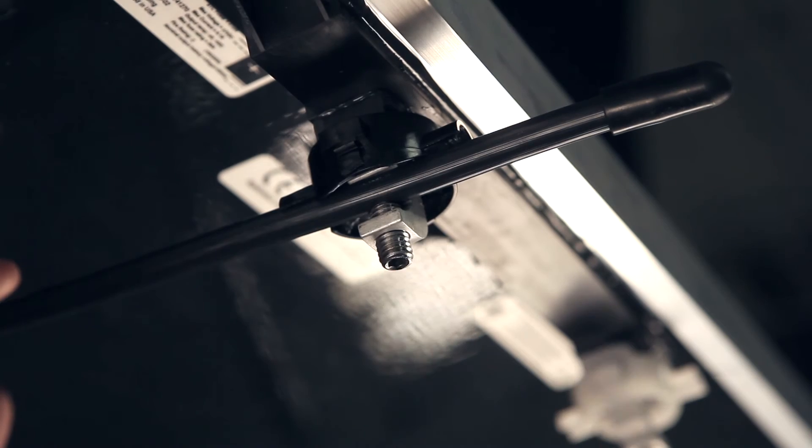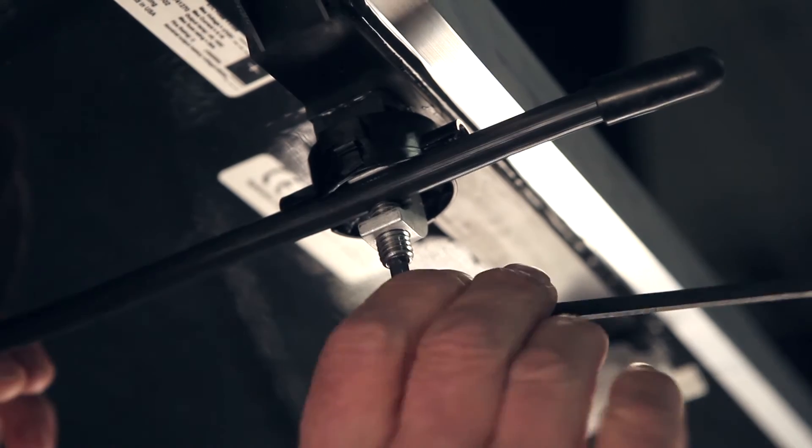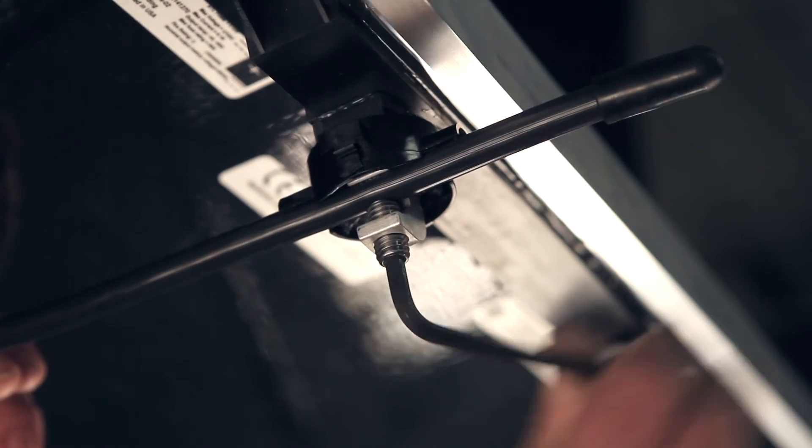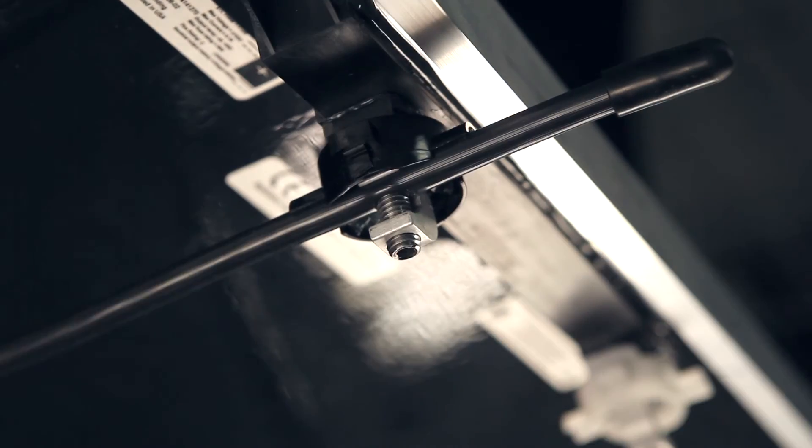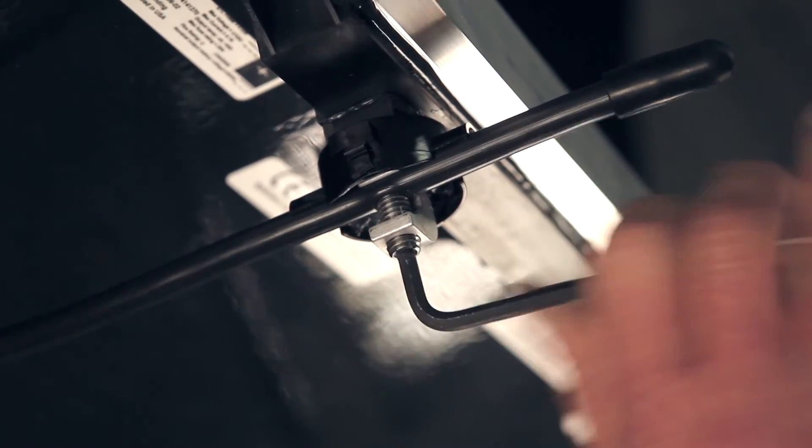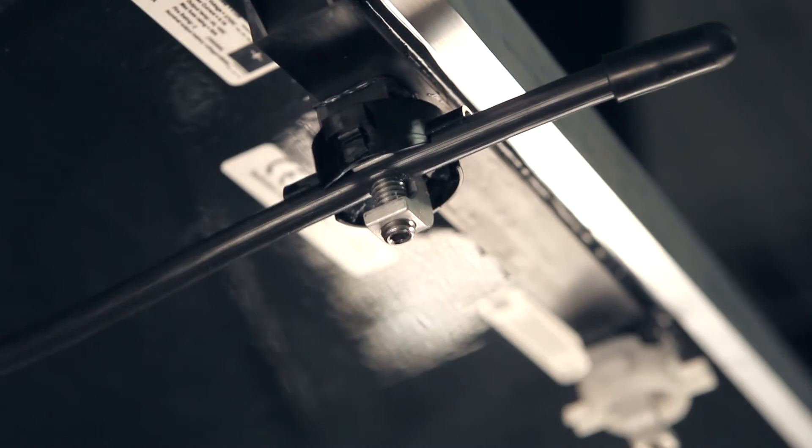Using a 3/16 hex key, tighten the set screw three and a quarter turns. Wait at least ten seconds and tighten another quarter turn. This is equivalent to nine and a half foot-pounds.